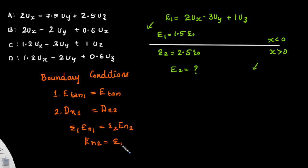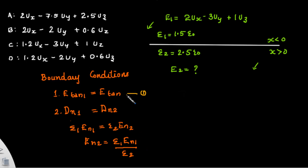En2 will be equal to epsilon 1 times the normal component of the electric field in medium 1, divided by the permittivity of medium 2. Using this equation we can find out the tangential electric field in medium 2, and using this equation we can find out the normal electric field at medium 2.